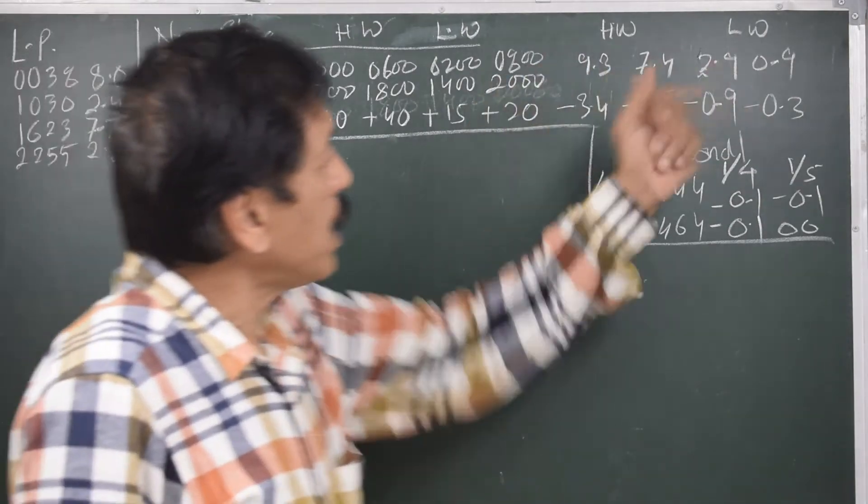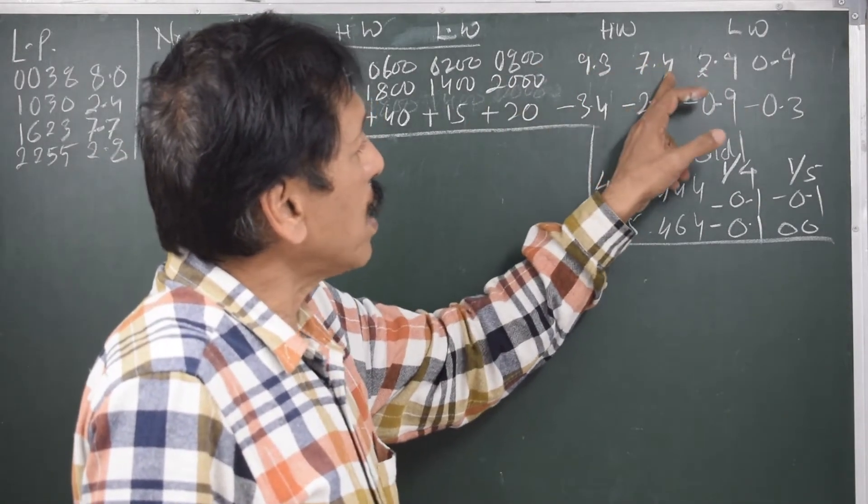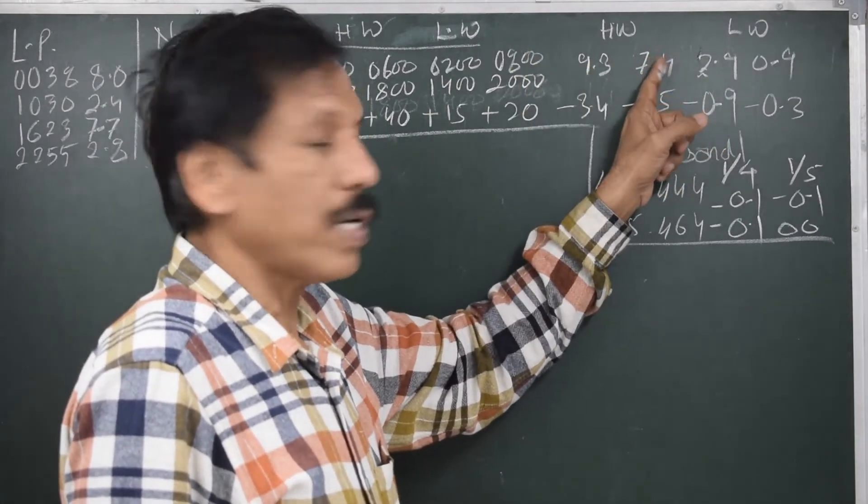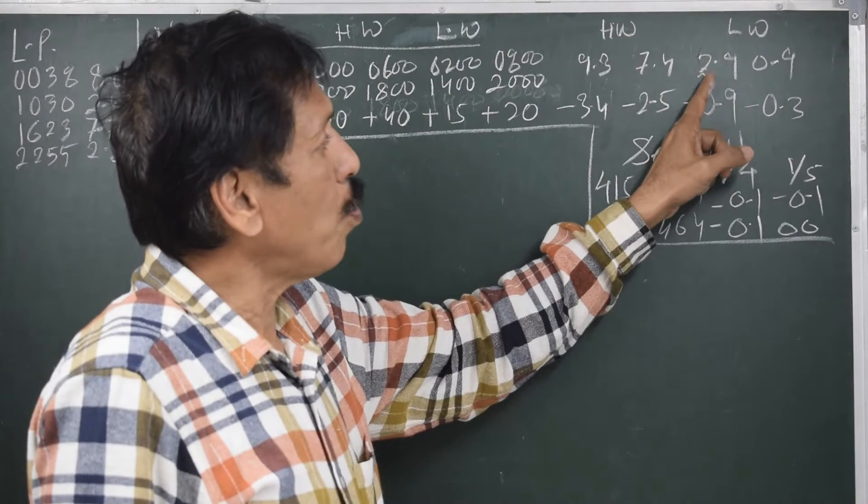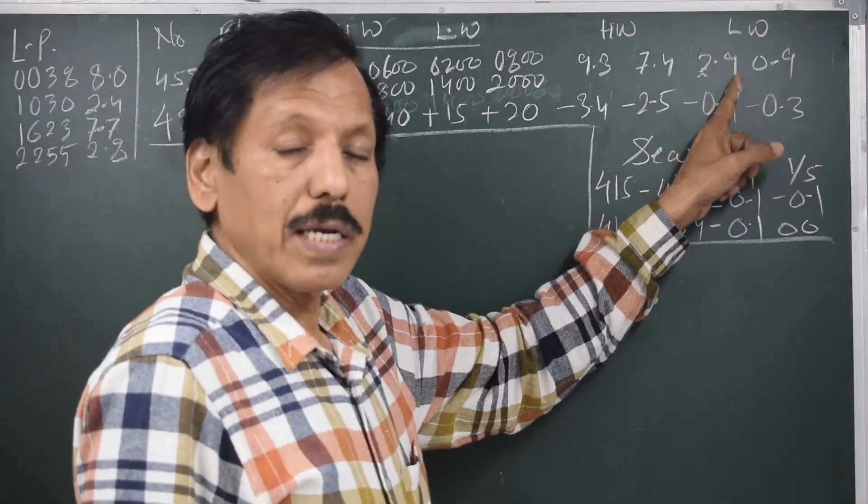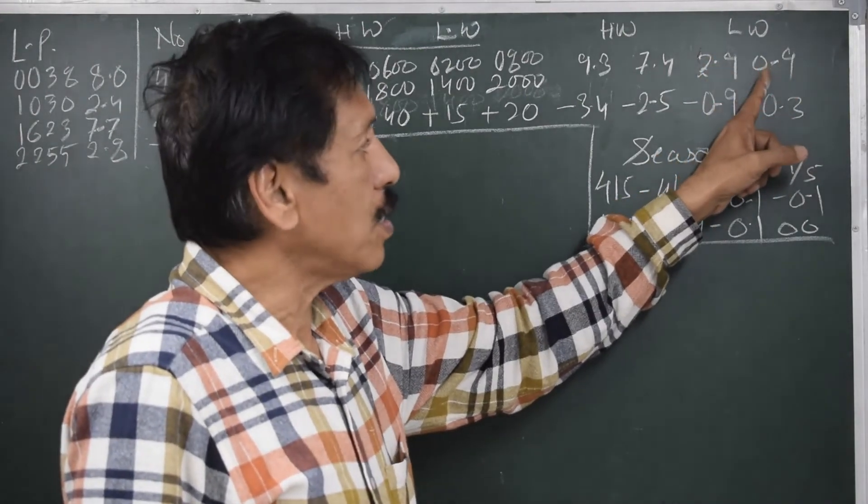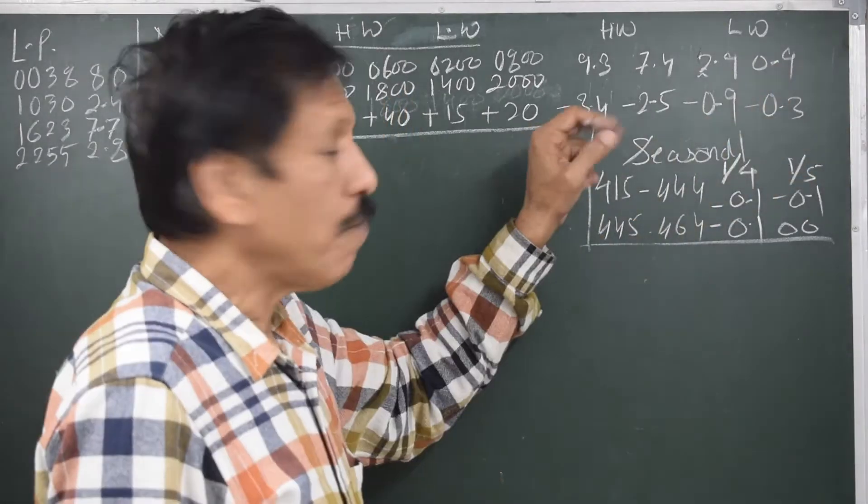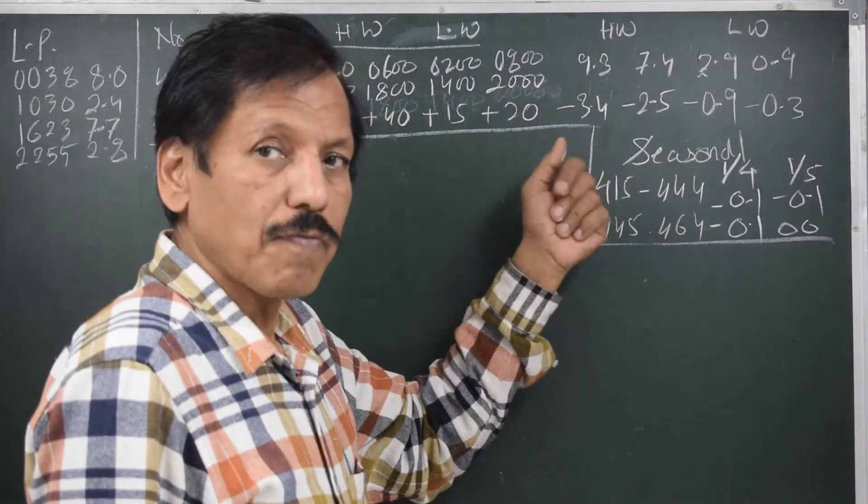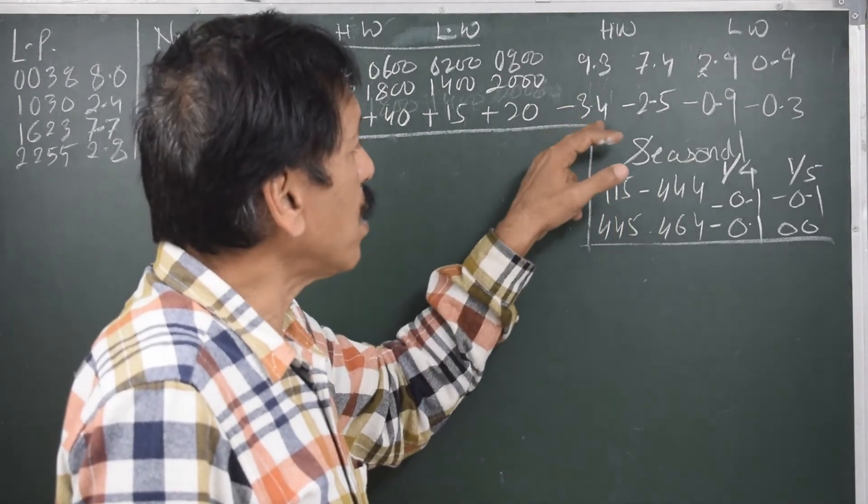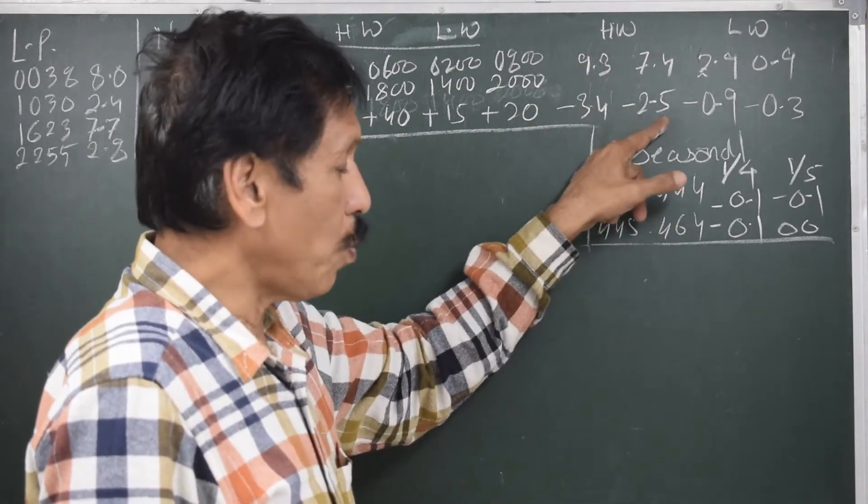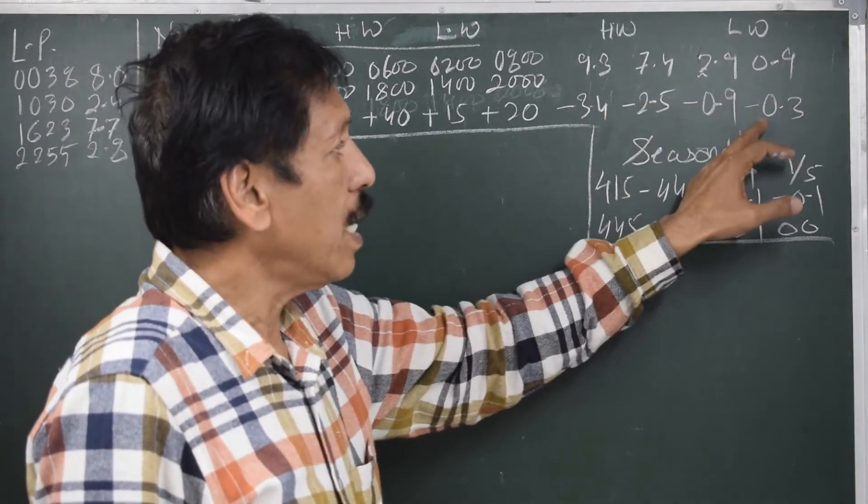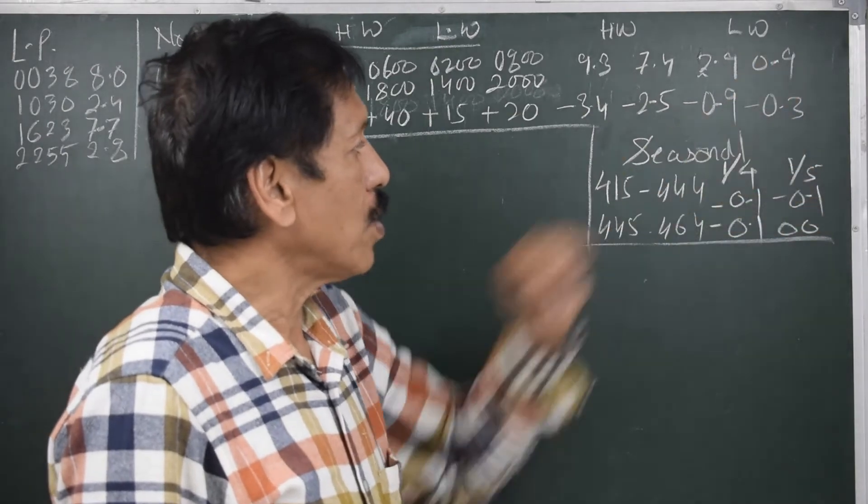Now if you consider the height, 9.3 and 7.4 are mean high water spring and mean high water neap heights. Same way 2.9 and 0.9. 2.9 is mean low water neap and 0.9, which is very shallow, is mean low water springs. If you see the corresponding time difference for Drumor is minus 3.4 for 9.3, minus 2.5 for 7.4, minus 0.9 for 2.9, minus 0.3 for 0.9.